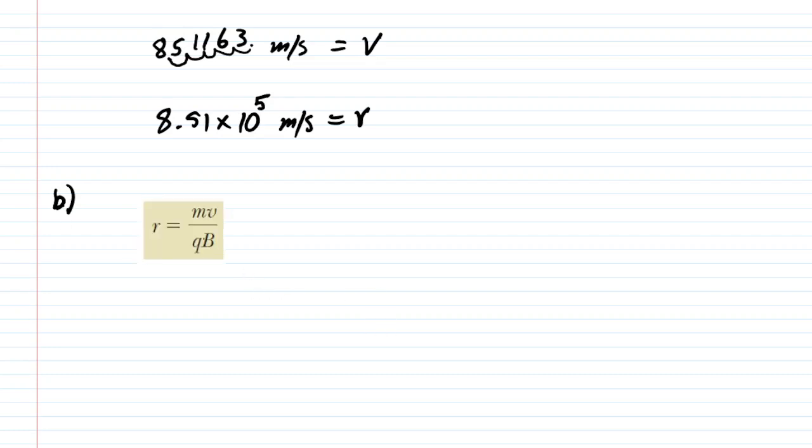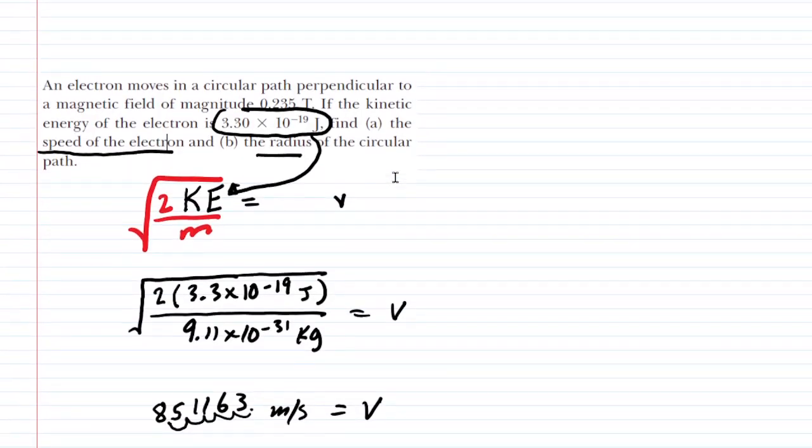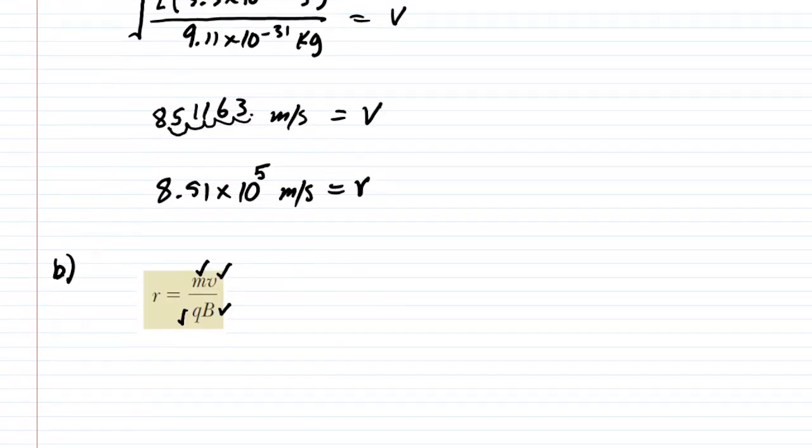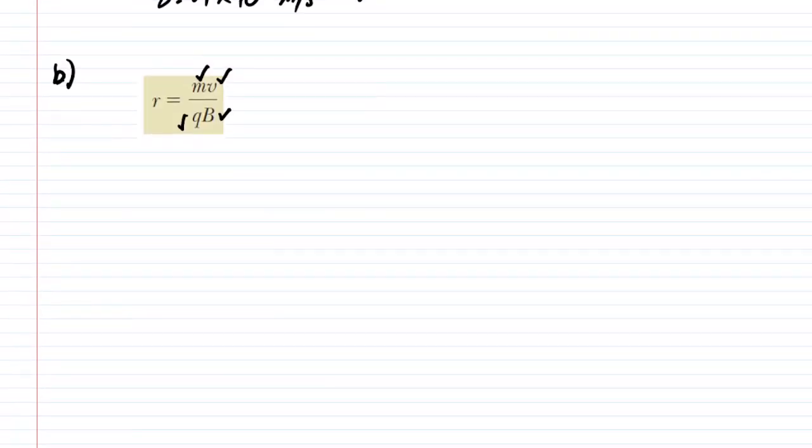In this equation we can easily calculate the radius. We simply need the mass of the electron which we know, the speed v which we just determined, the charge of an electron which is a known value, and the magnetic field strength which was given to us as 0.235 tesla. We'll go ahead and plug in those four values and that will give us the radius of the electron's path.